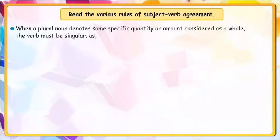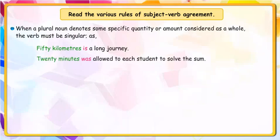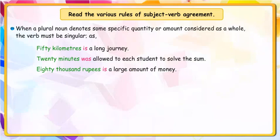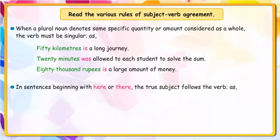When a plural noun denotes some specific quantity or amount considered as a whole, the verb must be singular. For example: 'Fifty kilometres is a long journey.' 'Twenty minutes was allowed to each student to solve the sum.' 'Eighty thousand rupees is a large amount of money.'